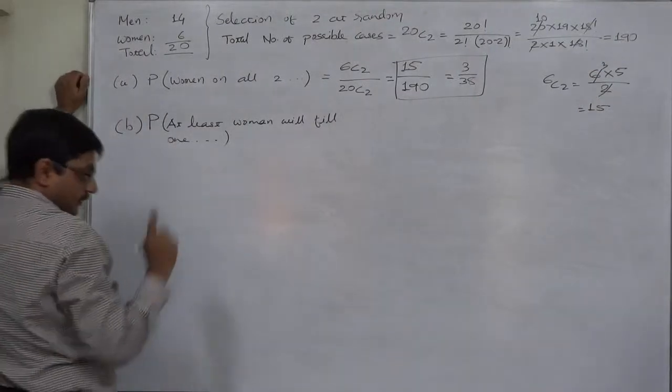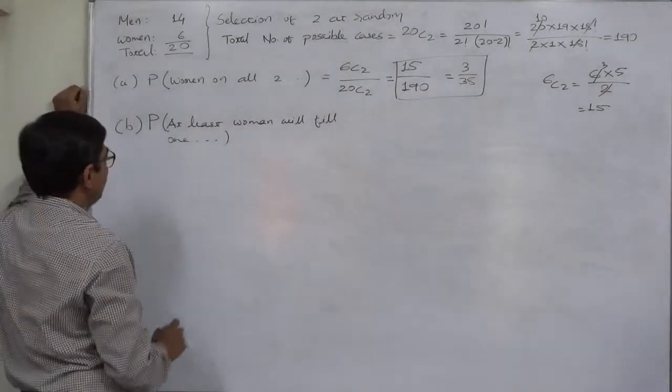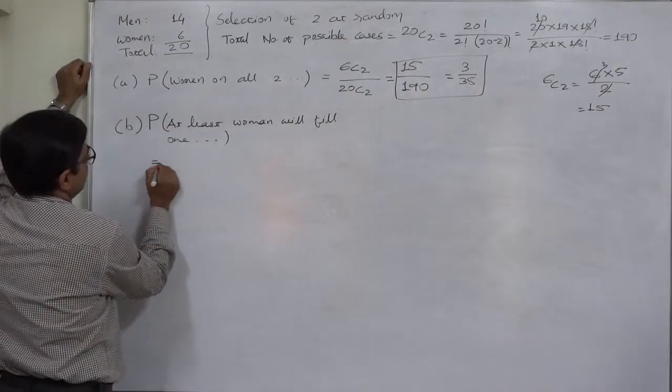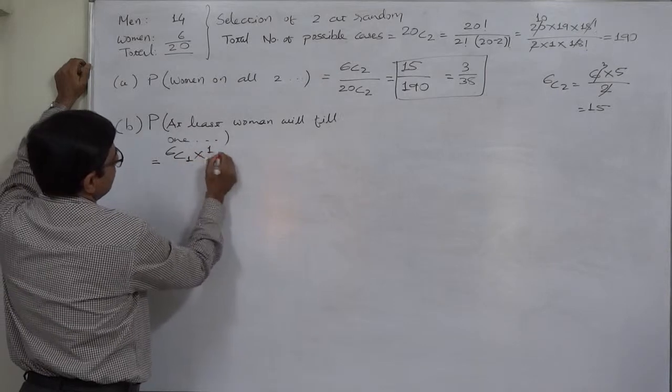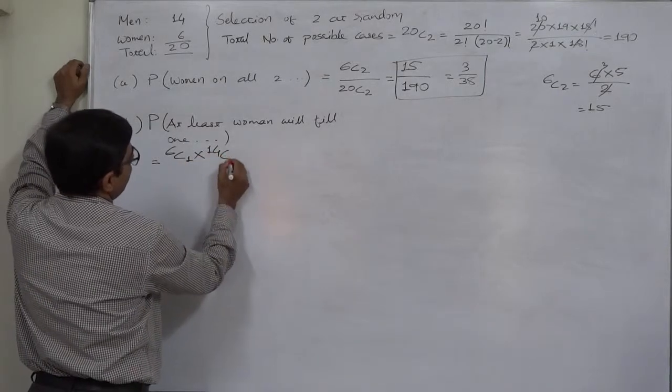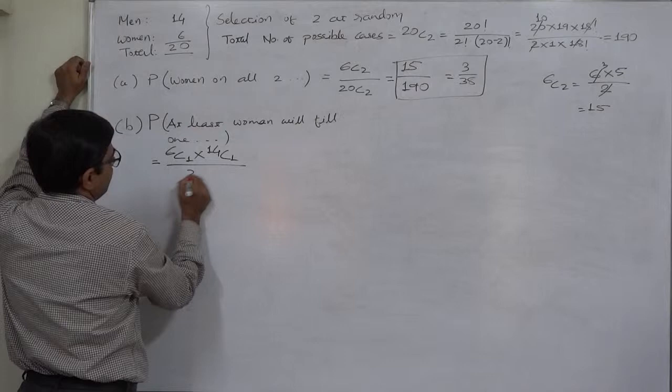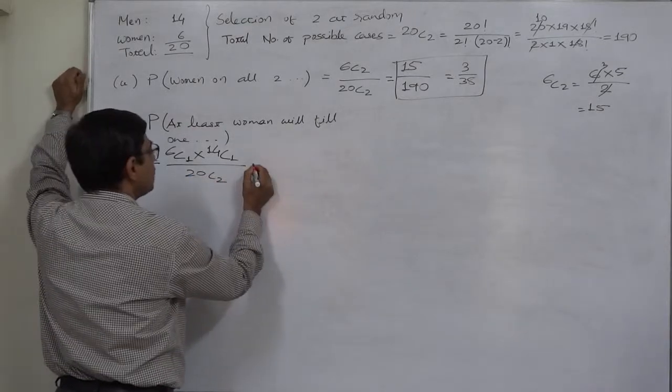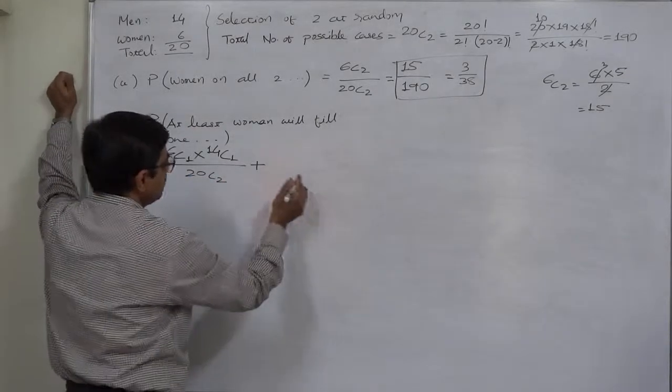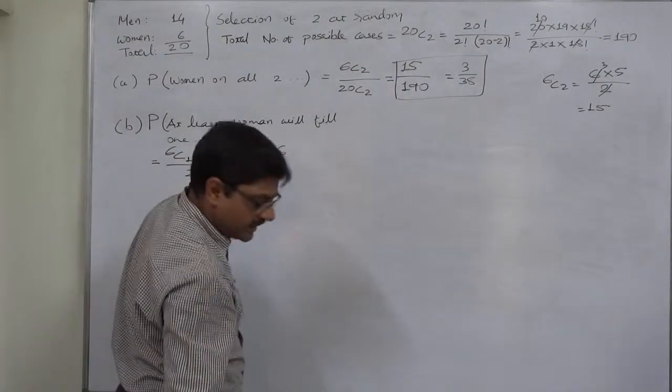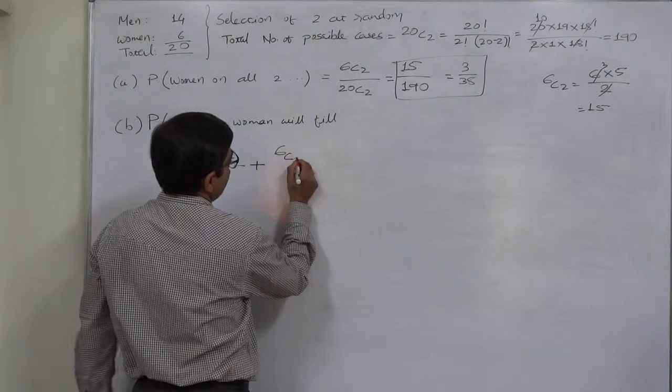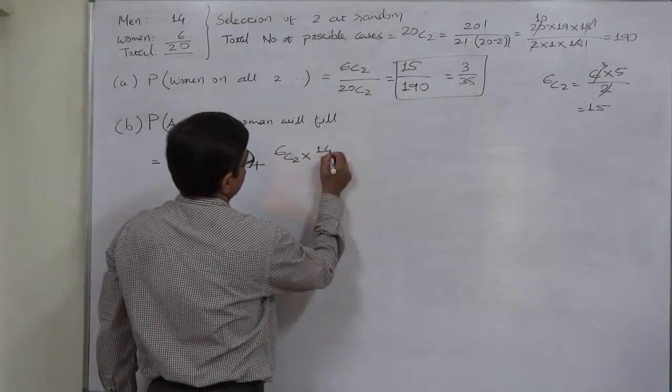At least one position will be filled by woman. That means the required probability will be either one position is filled by woman, that means one woman and one man is selected, or both the positions are filled by woman. That means on all the two positions, women are selected. That means 2 out of 6 and none out of 14.